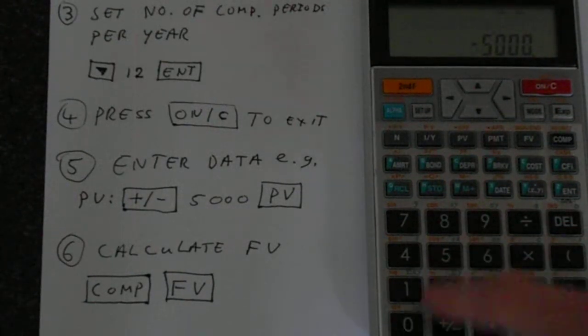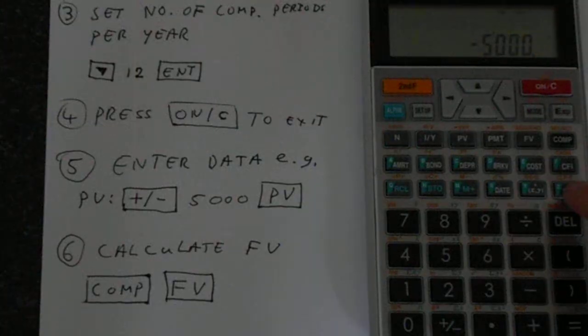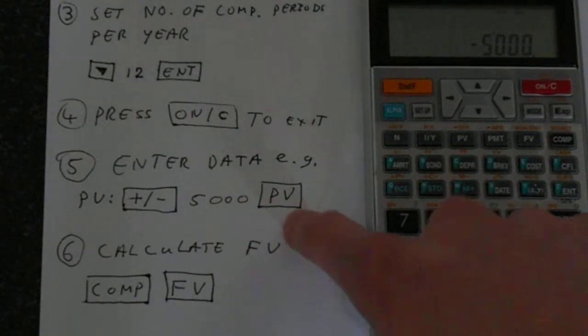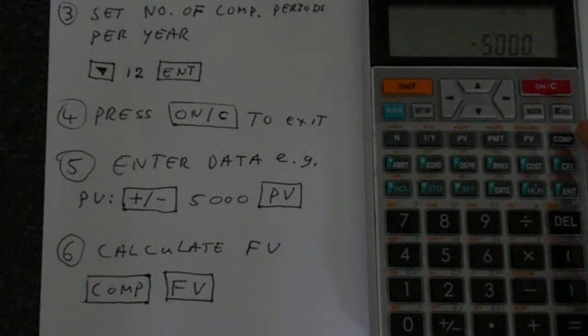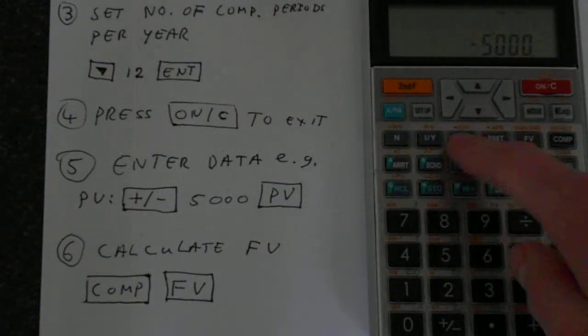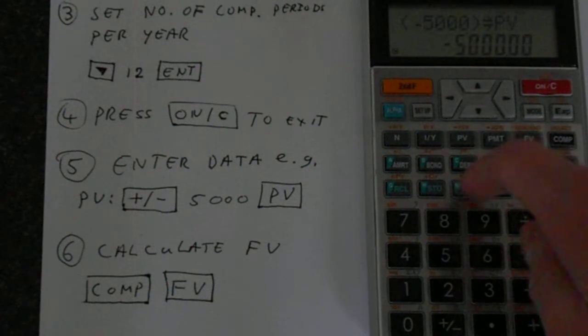We want 5,000. Use the apostrophes to help you. And then we're putting this 5,000 into the present value. So in this top row, you've got all the TVM, time value of money functions. So 5,000 goes into present value.